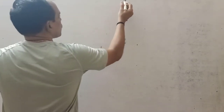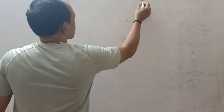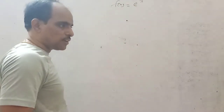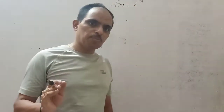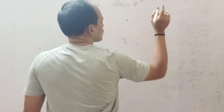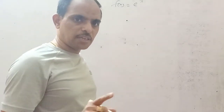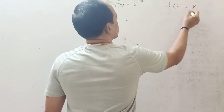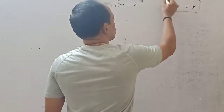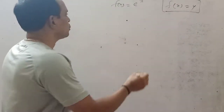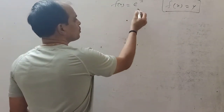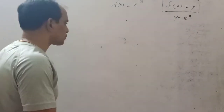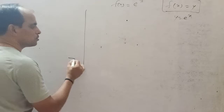I am going to draw the graph of e^x. f(x) is equal to e^x. You should always remember that in mathematics, f(x) means y — f(x) is equal to y. So I am going to draw y = e^x.